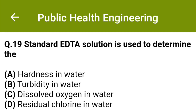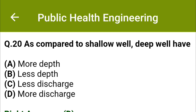Standard EDTA solution is used to determine: option A: hardness in water, option B: turbidity in water, option C: dissolved oxygen in water, option D: residual chlorine in water. The correct answer is option A: hardness in water. As compared to a shallow well, a deep well will have: option A: more depth, option B: less depth, option C: less discharge, option D: more discharge. The correct answer is option D: more discharge.